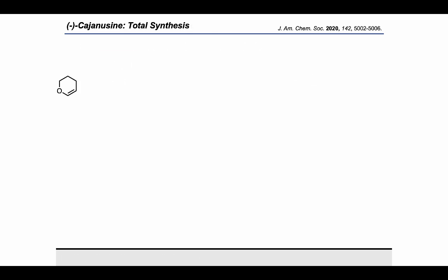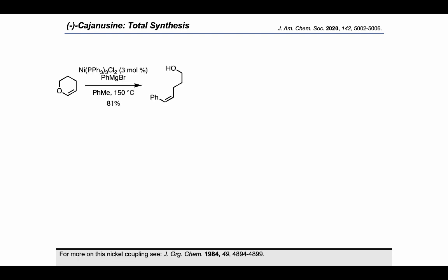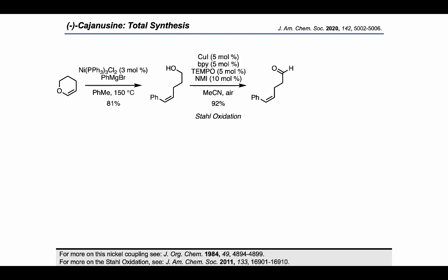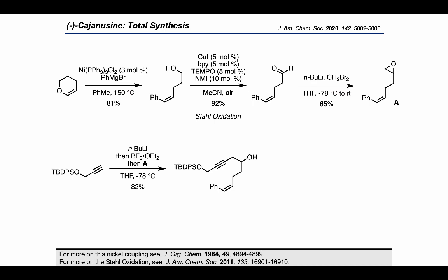So let's see how the authors ended up dealing with these issues in their final route. Starting from dihydropyrane, they carried out a nickel-catalyzed cross-coupling with phenylmagnesium bromide to give a terminal alcohol product, which was carried through a Swern oxidation to give the aldehyde. Epoxidation of the aldehyde using n-BuLi and dibromomethane gave fragment A. Then, a terminal alkyne bearing a protected primary alcohol was treated with n-BuLi and used to open the epoxide in A. Dess–Martin oxidation allowed the synthesis of the ketone product.